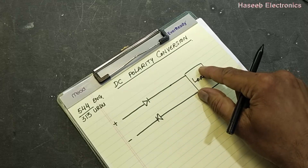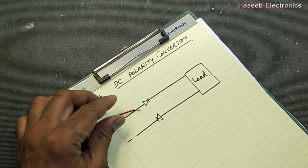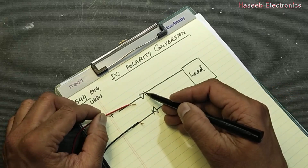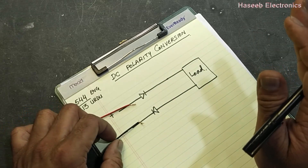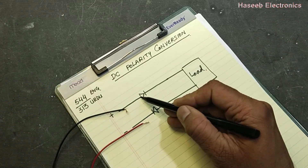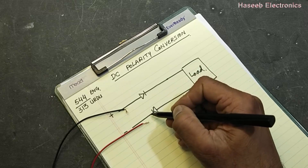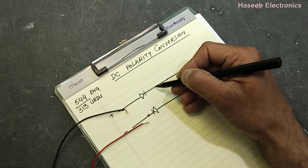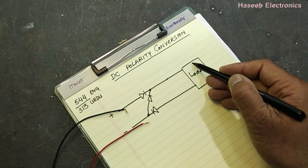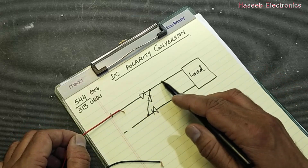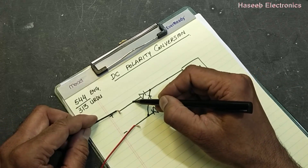We connect a diode here; positive will reach directly to the load and negative will reach directly to the load, so this will work normally. If we swap the leads — in the first condition this was positive, this was negative. Positive at the anode, diode forward biased, negative at the cathode, diode forward biased, it was working. But if we reverse the polarity, negative is now at the anode and positive at the cathode, it will stop working. So we connect another diode from this terminal to give positive voltage to this line.